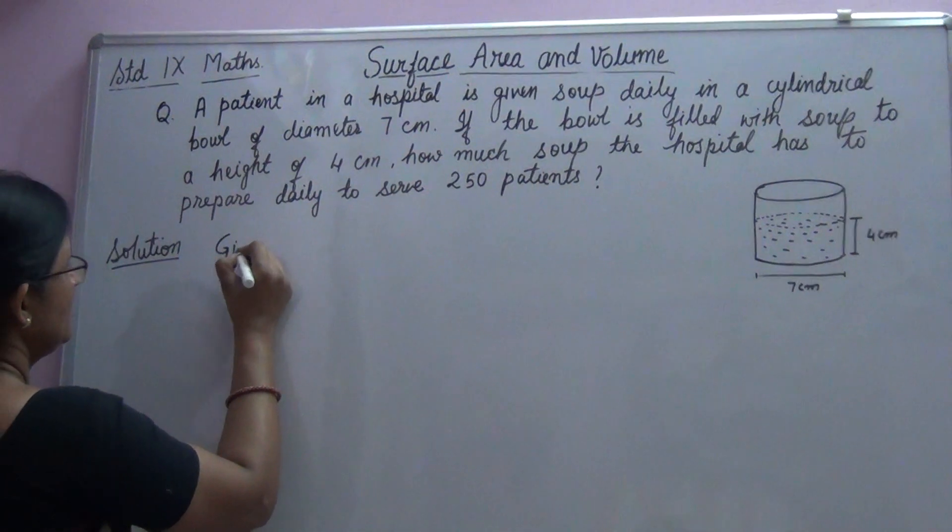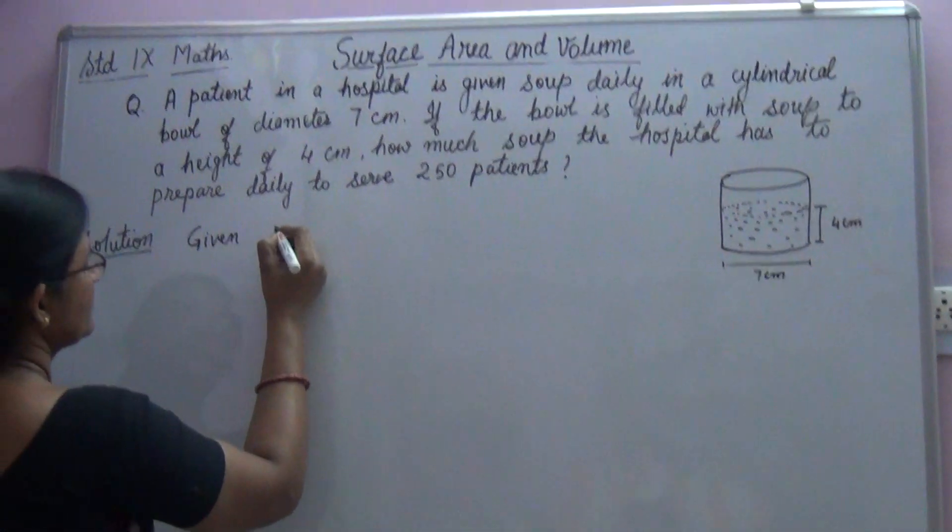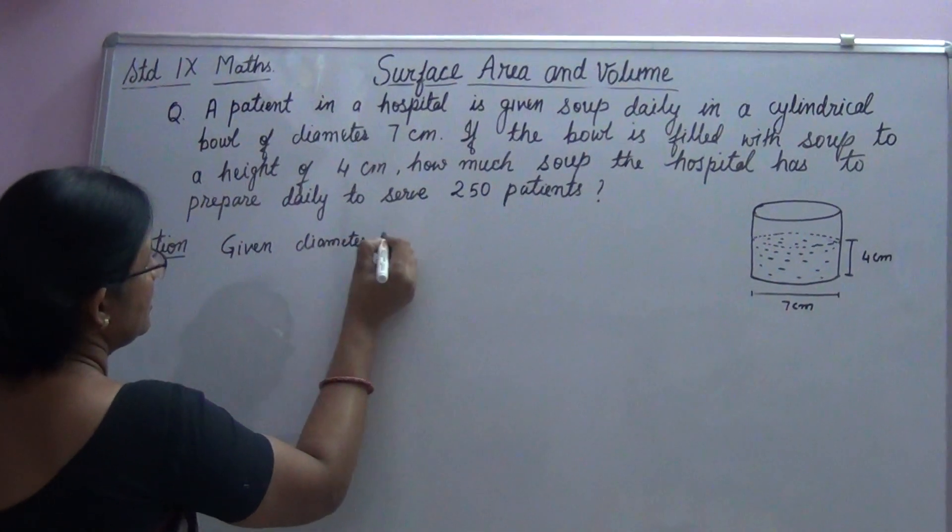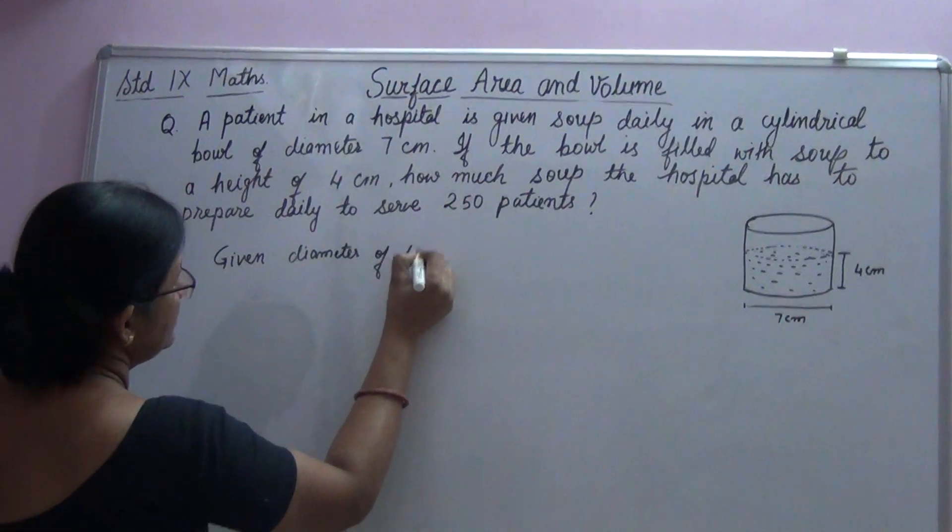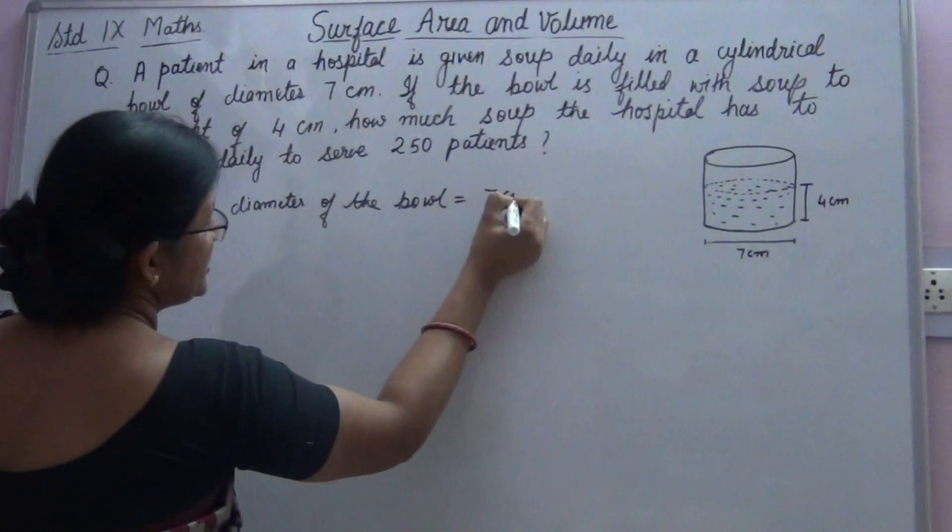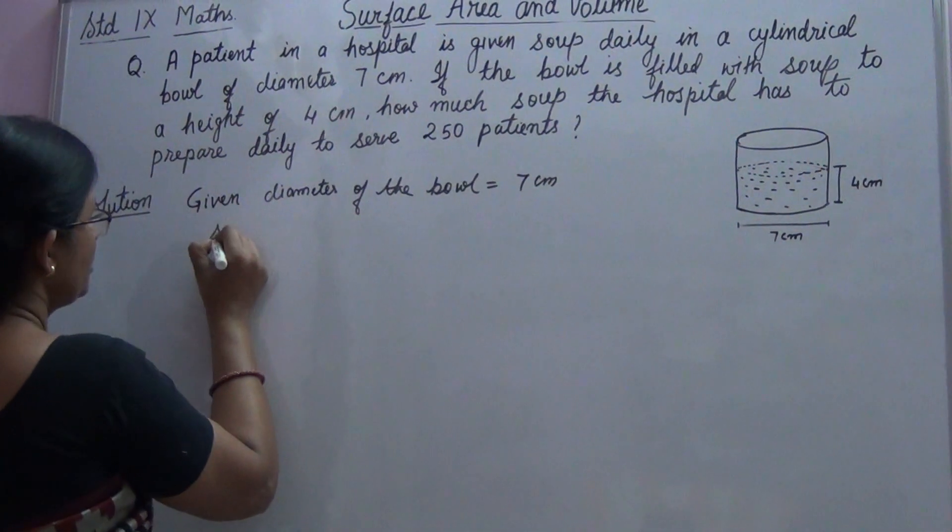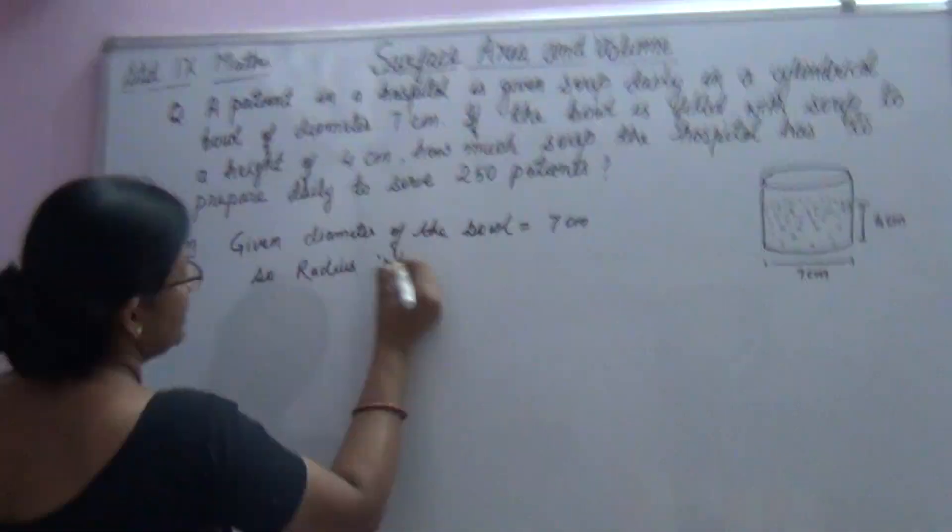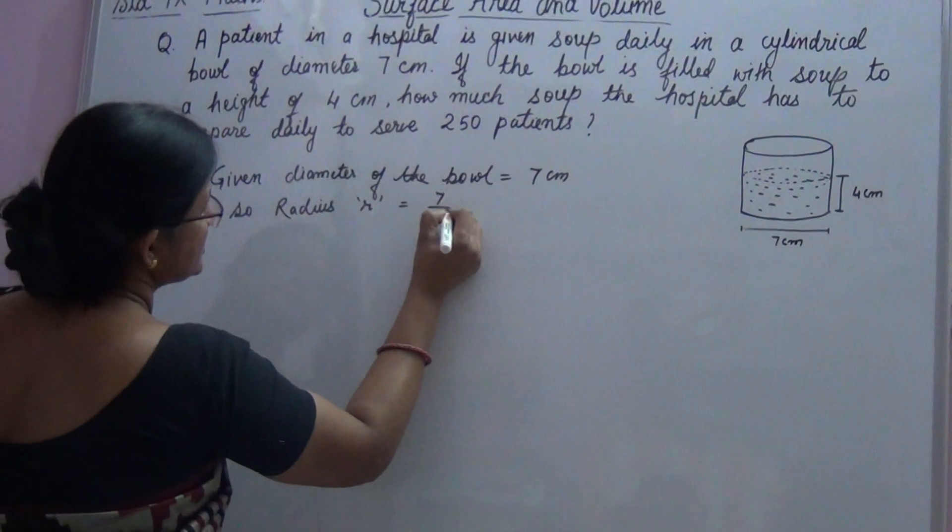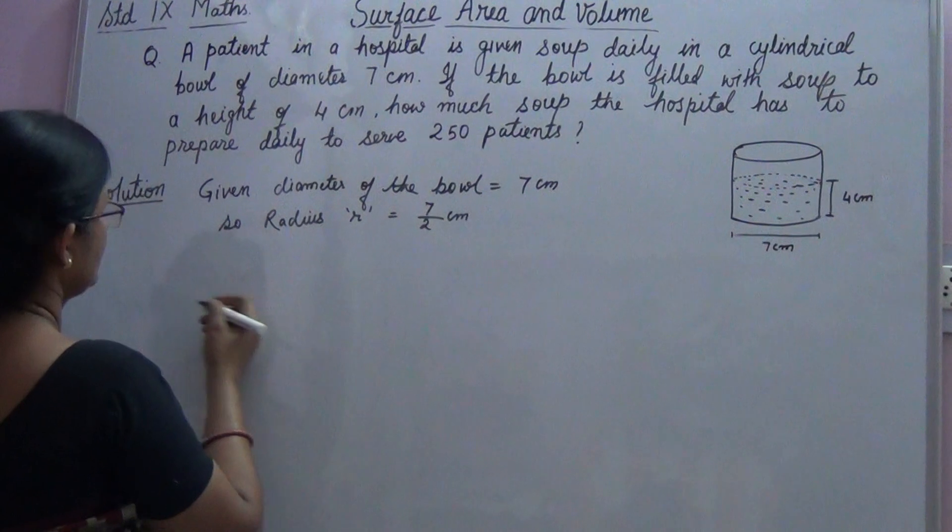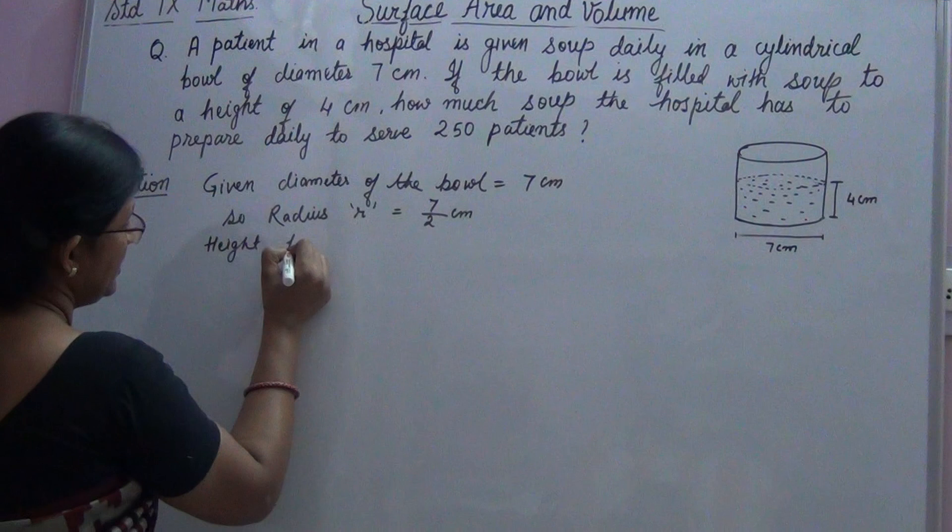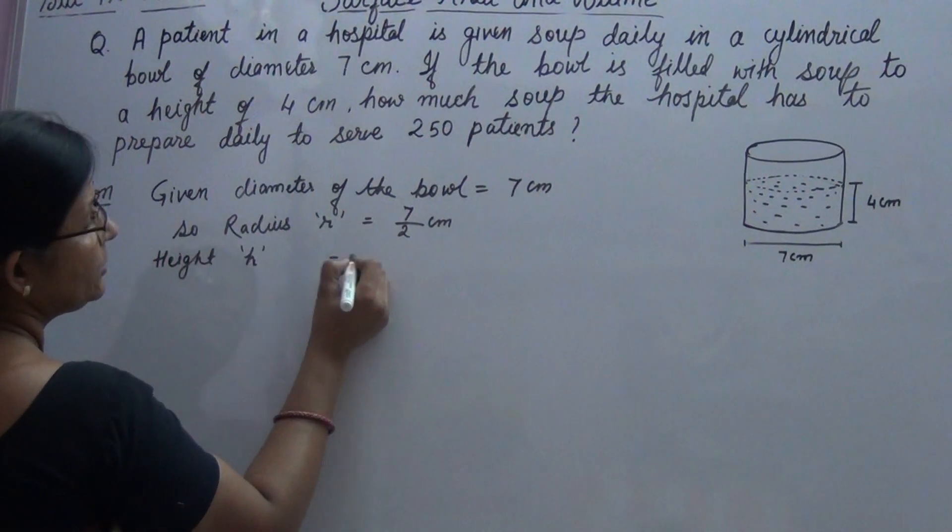Let us begin with the solution. Given diameter of the bowl is equal to 7 cm, so radius r is equal to 7 upon 2 cm. Height h is equal to 4 cm.